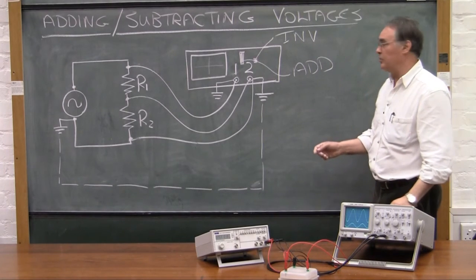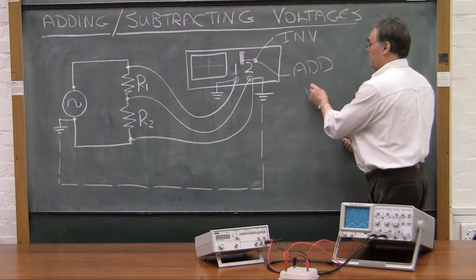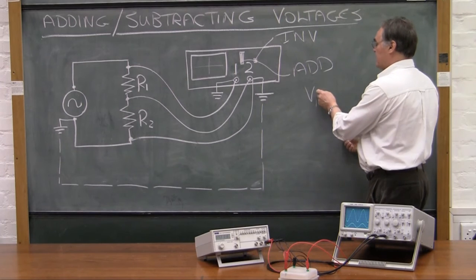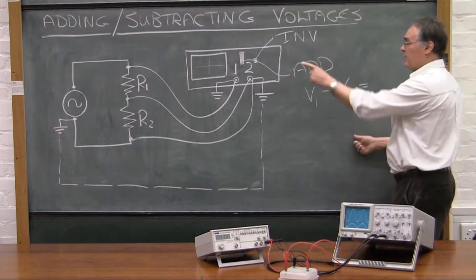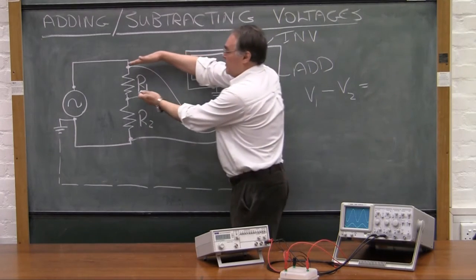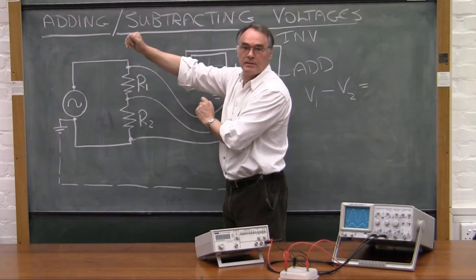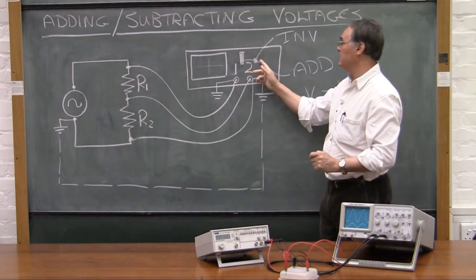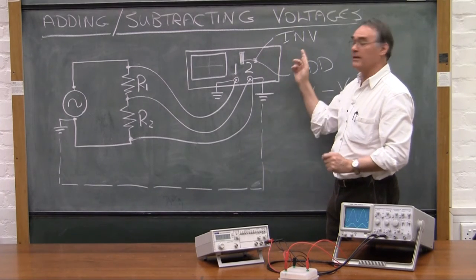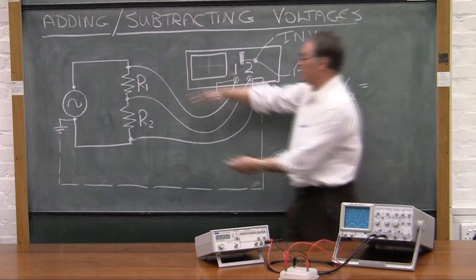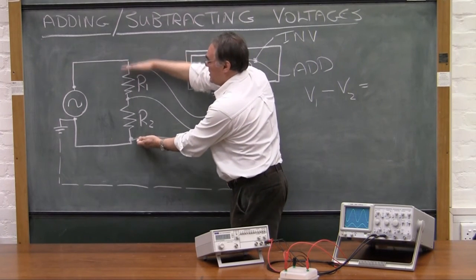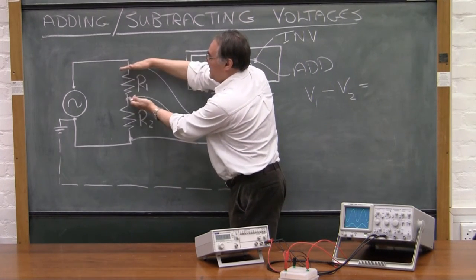What that will do, is it will take the voltage on channel 1, subtract the voltage on channel 2. And what it will give you, remaining, is the voltage between those two points. So the invert and add function together actually subtracts one voltage from the other. So it will give you that voltage minus that one, leaves you with that one.